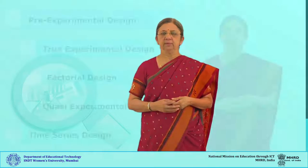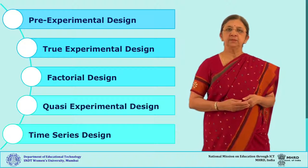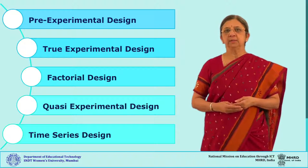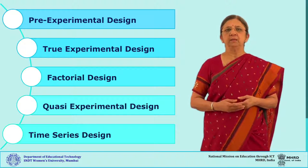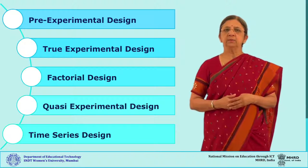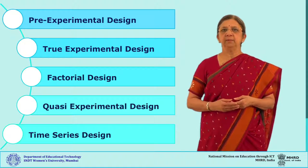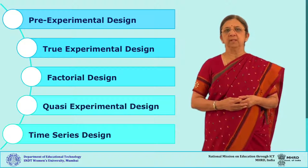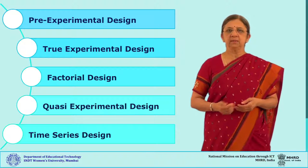Experimental research methods are quantitative methods whose basic purpose is to establish a cause and effect relationship between two variables: independent variable and dependent variable. Today we will discuss various types of designs of experimental method. There are many, but they are grouped under five: pre-experimental design, true experimental design, factorial design, quasi-experimental design, and time series design. Under each group we will see what kind of designs can be employed by the researcher, keeping in mind the threats to internal validity as well as external validity.